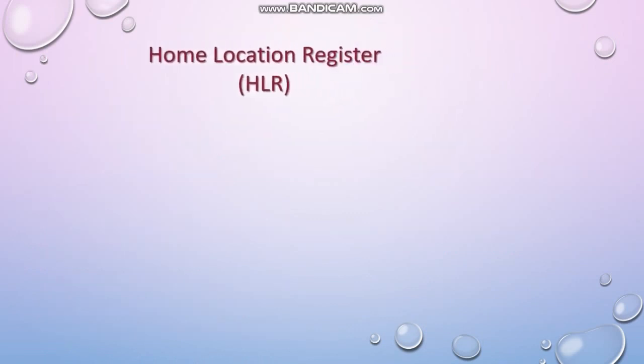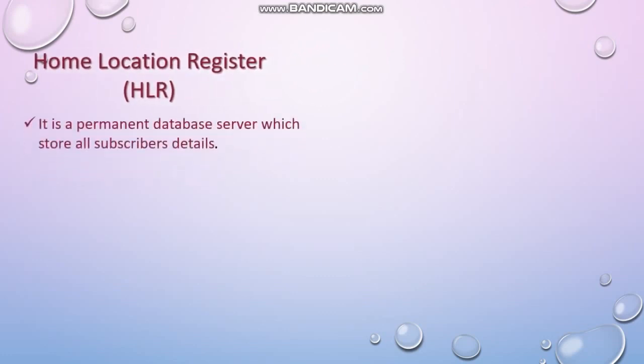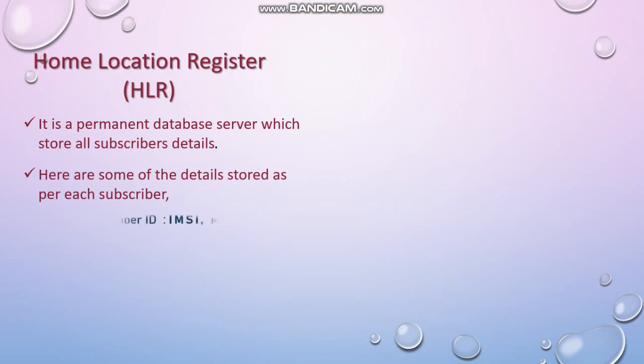Home Location Register. As the name suggests, it is the permanent home for all the details of any subscriber. Here are some of the details stored per subscriber: Subscriber ID, denoted as IMSI — which is short for International Mobile Subscriber Identity — or MSISDN, which is the mobile number you dial to call someone.